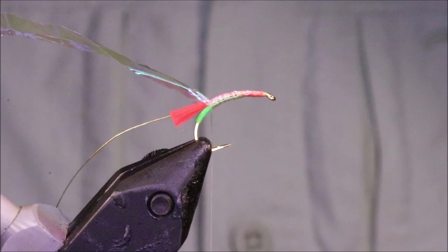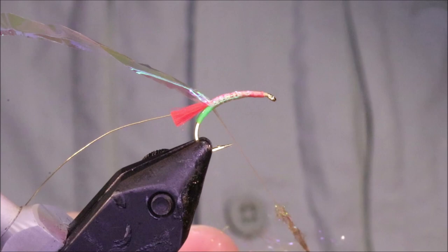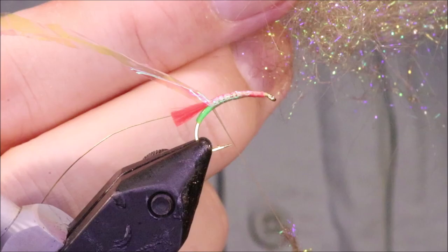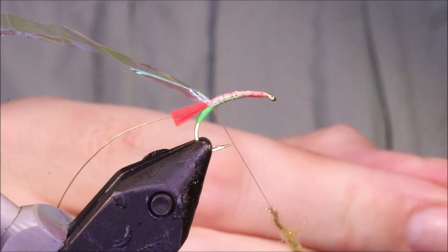Dubbing. Light golden olive Prismadub is what Colin uses. I've run out of this, but I've blended up some olive Prismadubbing with some UV tan.